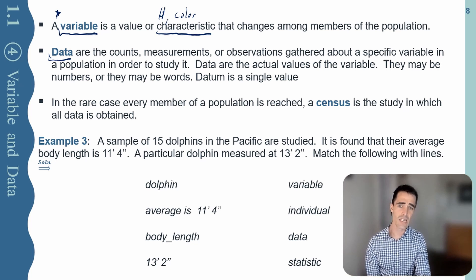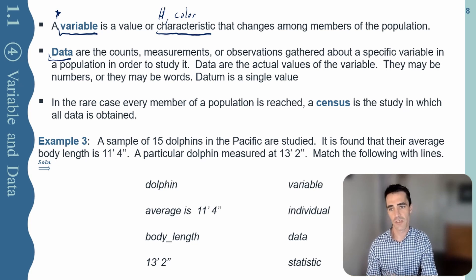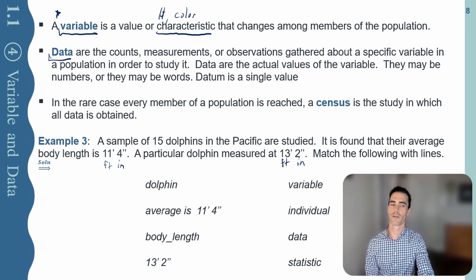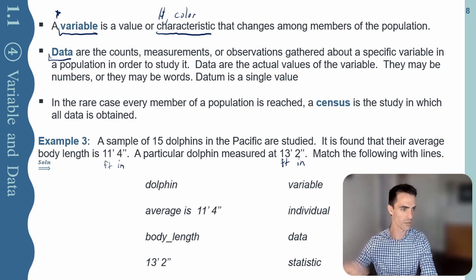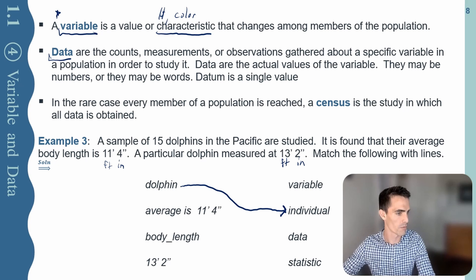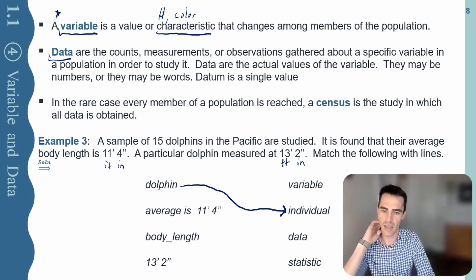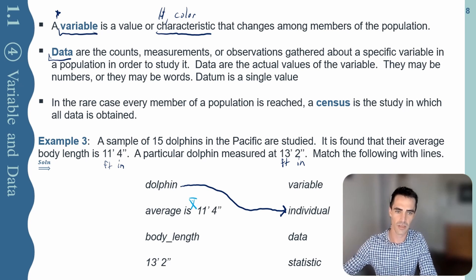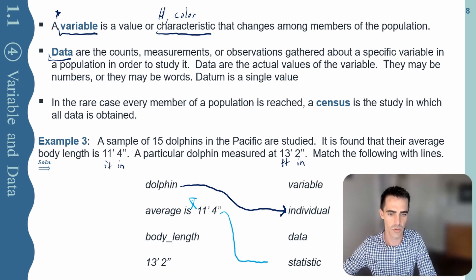A sample of 15 dolphins in the Pacific are studied. It's found that their average body length is 11 feet 4 inches. A particular dolphin is measured at 13 feet 2 inches. The dolphin is the individual — that's what we're studying. The average 11'4" comes from my sample, so X̄ — that's a descriptive statistic since it summarizes everything. Body length is the characteristic we're interested in studying, so that's the variable. The 13'2" measurement from one individual dolphin — that's data.